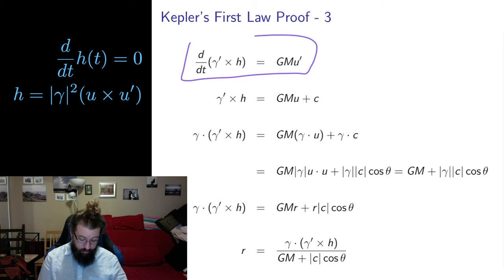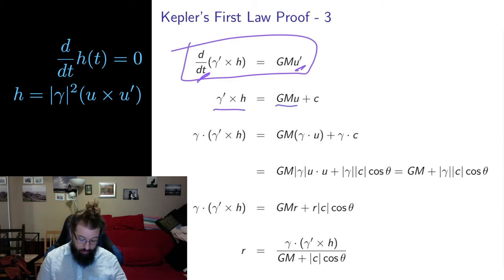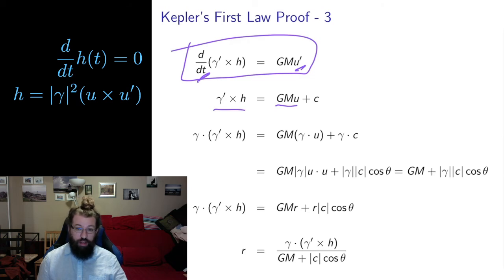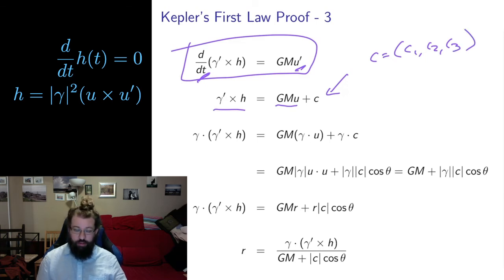Why is this good? Because both sides are now time derivatives, so I can integrate both sides to eliminate those derivatives. Integrating gives GM times u on one side plus a vector of constants c — since u and gamma and H are all vectors, I get a vector of constants c1, c2, c3 from integrating term by term. This is really good because I've taken a second-order differential equation with acceleration and turned it into a first-order equation.